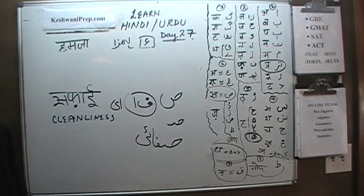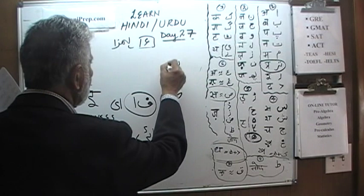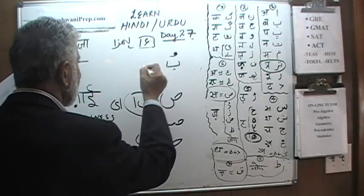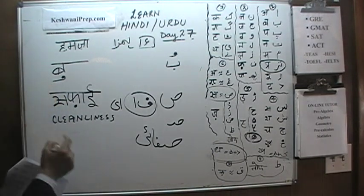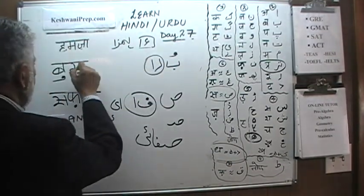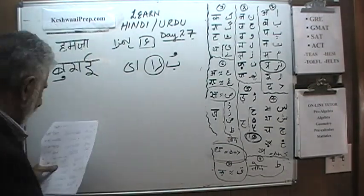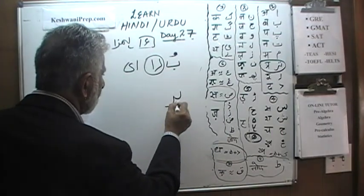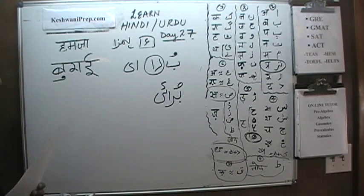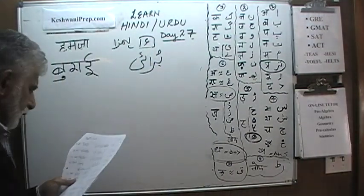With 'safai' let's do something that would qualify as a remote antonym — not quite the opposite, but related. The word is 'burai' meaning something bad. We write: Ba with 'u ki matra' (using a Pesh), then Ra, then 'ai': 'burai' — something bad or evil.